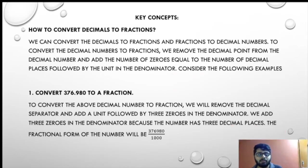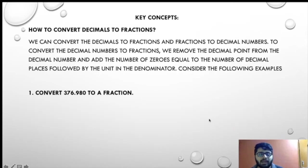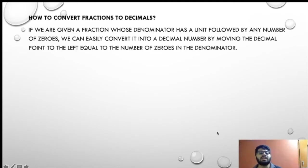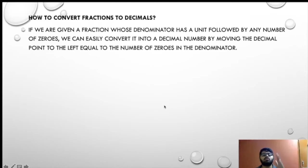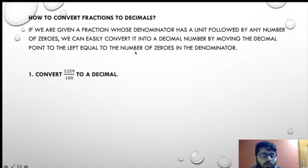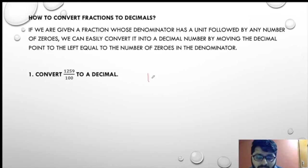Now our new topic will be fraction to decimal. How to convert fraction into decimal? If we are given a fraction whose denominator has a unit followed by a number of zeros — such as 1000, 2000, 100, 10, 10000, lakh, ten lakh — we can easily convert it into decimal numbers by moving the decimal point to the left equal to the number of zeros in the denominator.